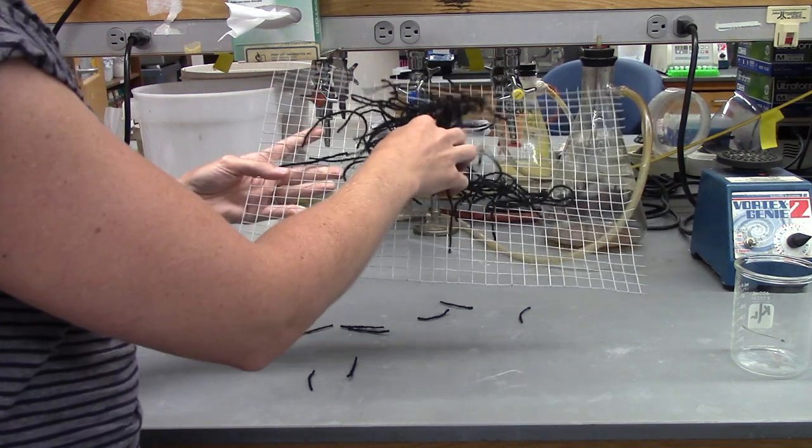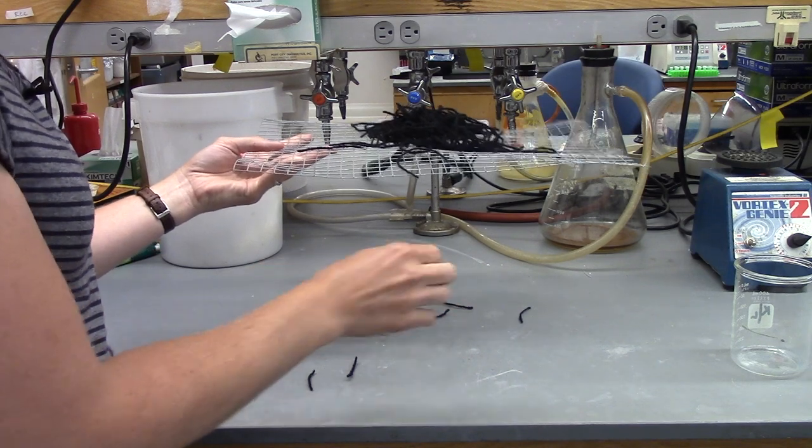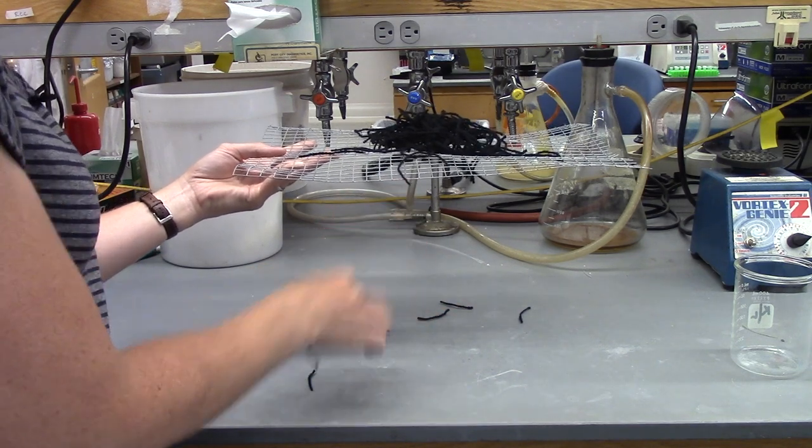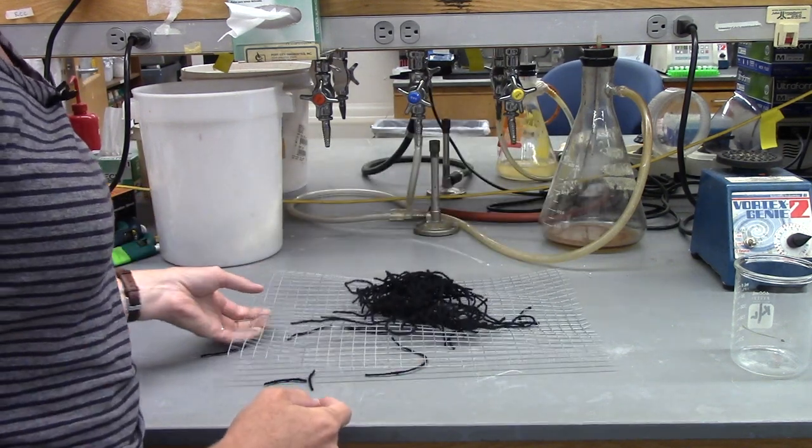Now, gel electrophoresis is actually more like multiple layers of hardware cloth, so the little ones sneak their way through, and the long ones, it takes longer for them to make it all the way through all the layers of the mesh.